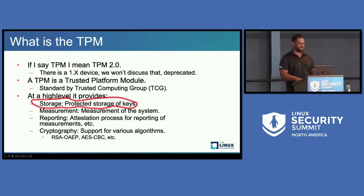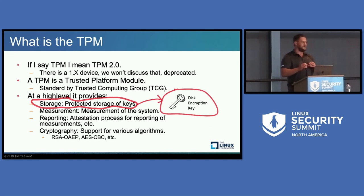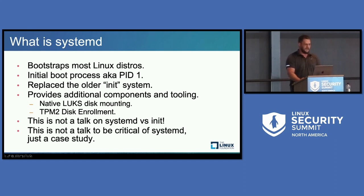This talk is mostly going to be around storage, the protection of those storage keys, and specifically the disk encryption key. If you're familiar with Windows BitLocker, it uses the TPM to store the disk encryption key and protect it, and then that disk encryption key is eventually released later. SystemD is the init process that replaced the init system — it bootstraps most Linux distros. It provides a lot of stuff; it's not just an init system, it's an ecosystem. One of the things it has is native LUKS disk mounting and TPM2 disk enrollment, letting you say: I want to take this hard disk and enroll it with a TPM key for protection.